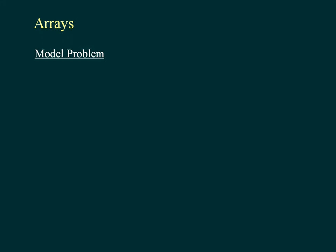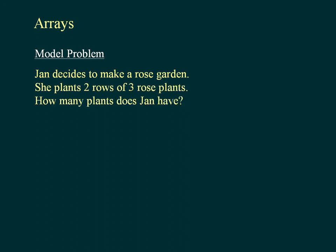Model problem: Jan decides to make a rose garden. She plants 2 rows of 3 rose plants. How many plants does Jan have? 2 multiplied by 3 is equal to what?